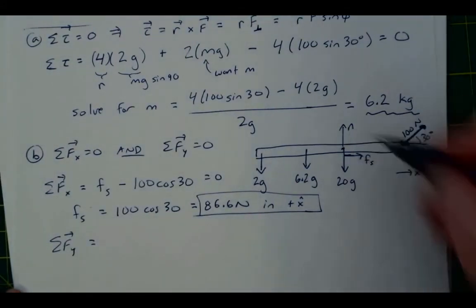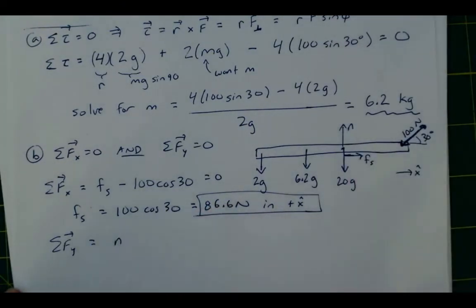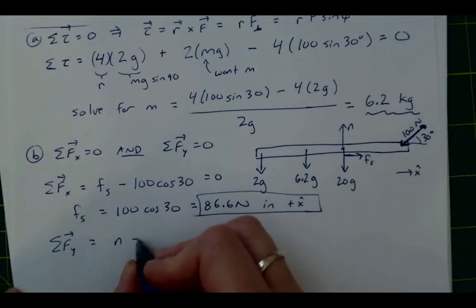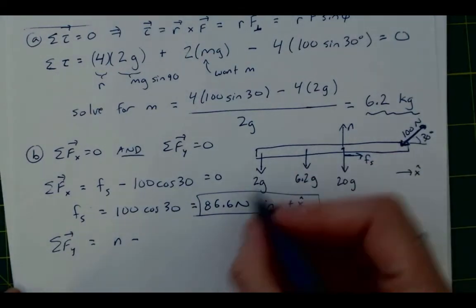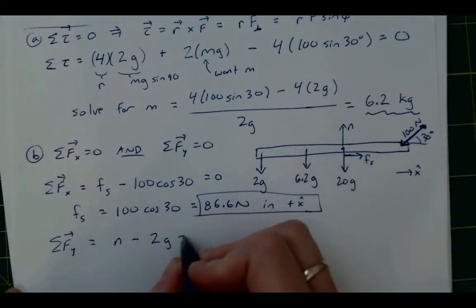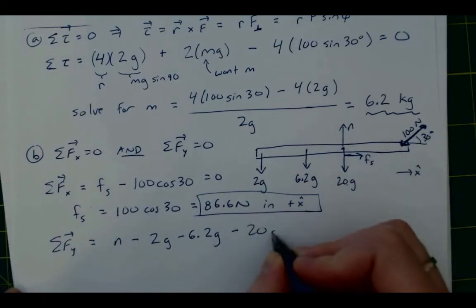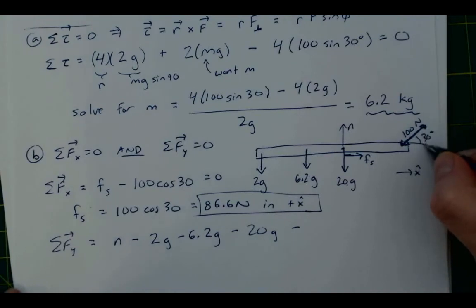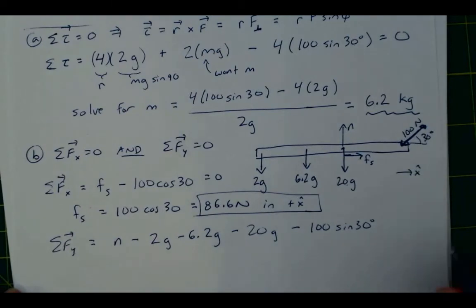And now if we look at the sum of forces in y, we can then get what the normal force is. And so we have the only force pointing up is the normal force, and then minus the vertical components of all of these. So that would be minus 2g, minus 6.2g, minus 20g, and then minus the vertical component of this, which was 100 times the sine of 30.